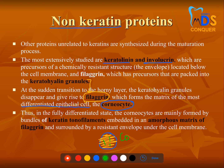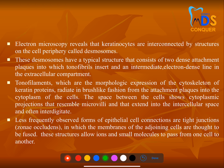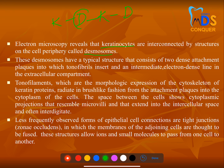Keratinocytes are the major type of cells present in the epithelium. Desmosomes are the structures that connect keratinocyte to keratinocyte. There is a detailed image in the next slide that will make this clearer, so make a note of these points and let's move on.